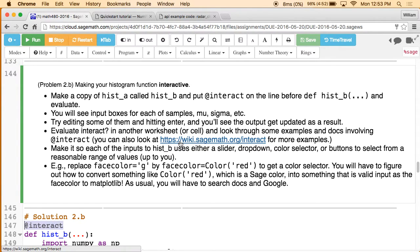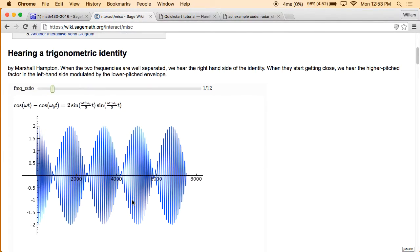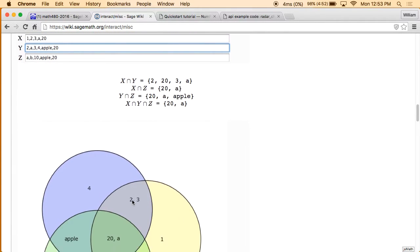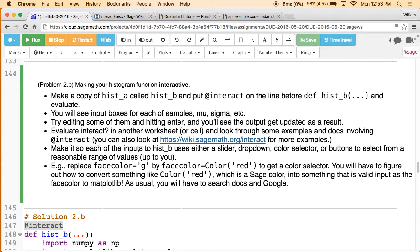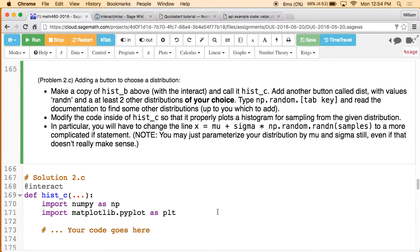It'll be an interactive application with little input boxes. Then you'll learn about this interact thing. Basically what interact does is it lets you make little things where you have sliders and you get some output. It's very easy to use. Or input boxes, sliders, check boxes, etc. So what you're going to do is make it so that like the color of the histogram, you use a little color selector, the other parameters use sliders and so on.